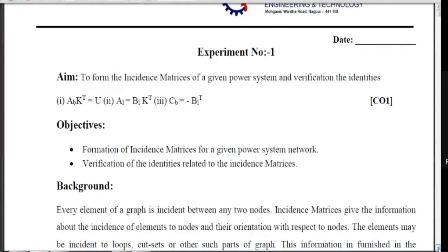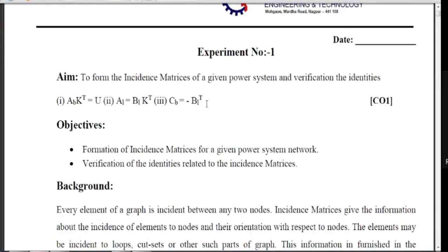Today we are starting with our practicals of computer applications in power systems. The first experiment we are going to conduct is to form the incidence matrices of a given power system and verify the identities: AB into K-transpose equals U, AL equals BL into K-transpose, and CB equals minus BL-transpose. We have already proved these three identities in Unit 1. Now we are going to take this experiment into MATLAB.